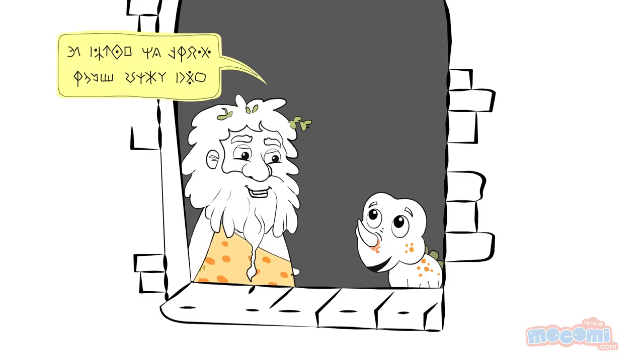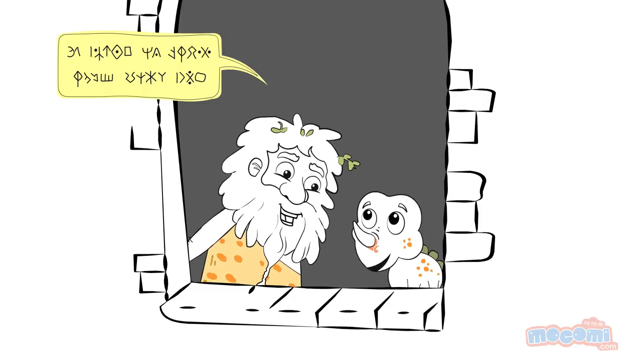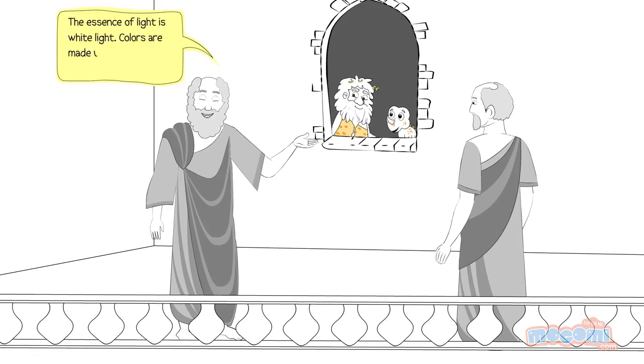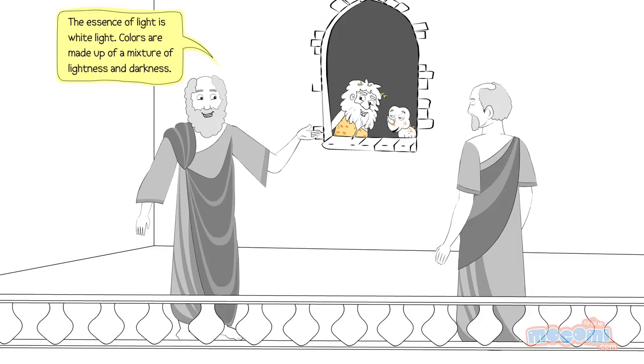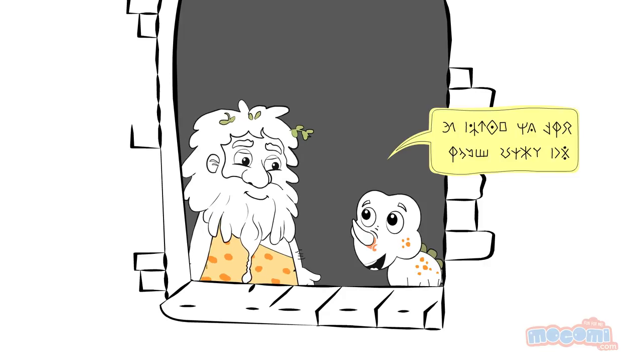Somewhere between 384 BC and 322 BC, Aristotle was responsible for one of the first theories of light. But is that really what light is composed of?